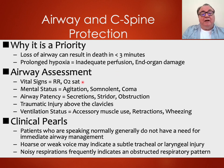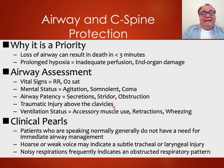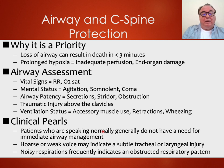Airway assessment includes vital signs — respiratory rate and oxygen saturation. Are you using a pulse oximeter? Mental status: a patient that's agitated, somnolent, or in coma may just have an airway problem and you must manage that immediately. Airway patency requires removal of secretions; signs of stridor and obstruction must be noted. Any injury above the clavicle could involve the airway. Check ventilatory status — are accessory muscles being used? Is there retractions or wheezing? Patients speaking normally generally do not have an immediate airway problem, but a hoarse or weak voice may indicate subtle tracheal or laryngeal problems. Noisy respiration frequently indicates an obstructed respiratory tract.